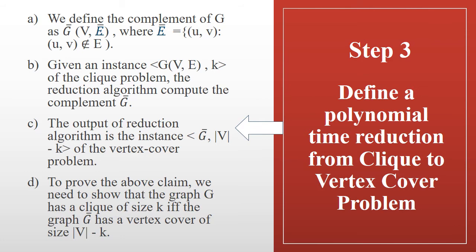The complement is represented as Ḡ = (V, Ē), where Ē consists of all edges not present in the given undirected graph. Given an instance ⟨G, k⟩ of the clique problem, we compute the complement of the given undirected graph using the reduction. The output of this reduction algorithm is ⟨Ḡ, |V| − k⟩ for the vertex cover problem.